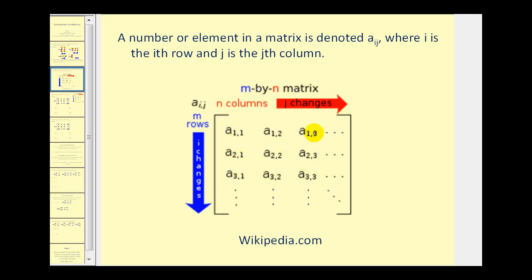Since each element in a matrix has a unique location based upon its row and column, we can identify the location of a specific element using this notation, where the first number would be the row and the second number would be the column. So this element is in row three, column one; this element is in row two, column three, and so on. Sometimes you'll see commas in between the row and column, and sometimes you won't — it just depends on the textbook.